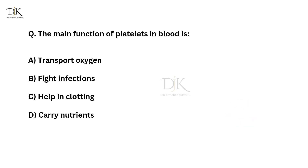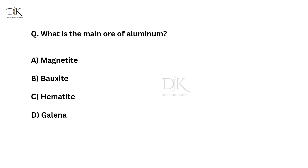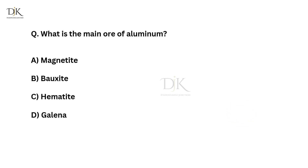What is the main ore of aluminum? Correct answer is bauxite.